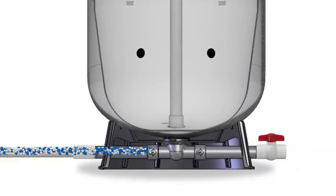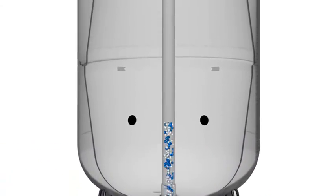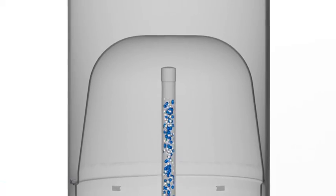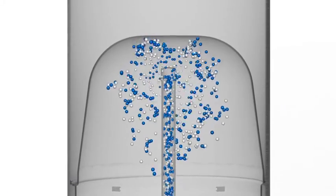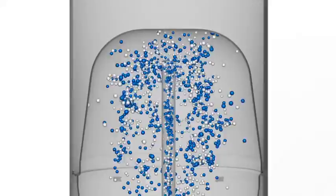The unmixed water-chlorine solution flows into the tank and up the tank's stack pipe, entering the tank's inner baffle water chamber where the mixing process begins.